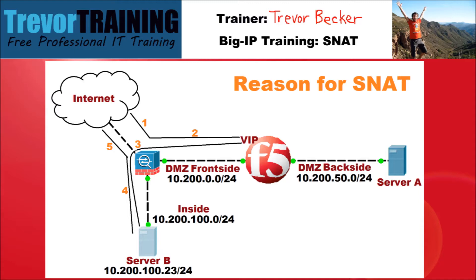4. Server B receives the request, analyzes and processes the application layer content, and forms a response. The destination IP address is of the original client on the internet. Because Server B does not have a route for the internet client, it sends the request to its default gateway, which is the edge firewall. The edge firewall receives the response, analyzes the destination IP address field in the packet, and sees that it's a host on the internet. It forwards it out in that direction.